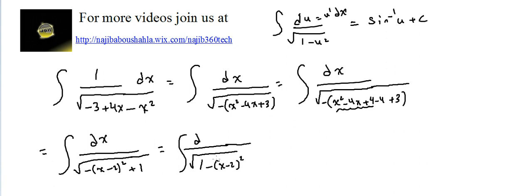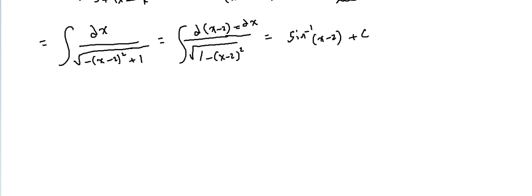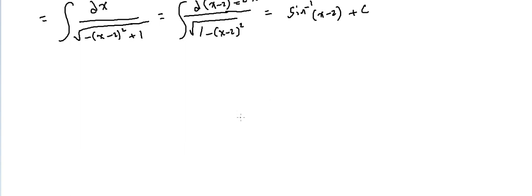So u = x - 2, and du = dx since the derivative of (x - 2) is 1. We now have integral of du over radical(1 - u²), which equals sine inverse of u, giving us sine inverse of (x - 2) plus C.